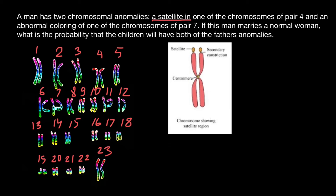Let's read our problem again. The man has two chromosomal anomalies: a satellite in one of the chromosomes of pair four — so this is this pair — and let's say that on one of the chromosomes we have a satellite and secondary constriction. And abnormal coloring of one of the chromosomes of pair seven — here's pair seven — and let's say that we have abnormal coloring of this chromosome here.